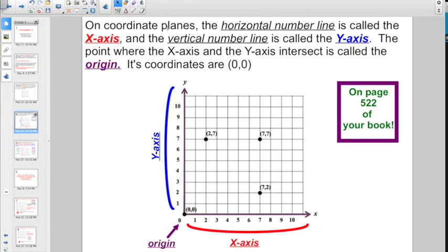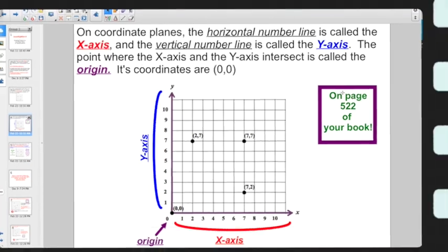We have a number line going horizontally, this is referred to as the x-axis, and a number line going vertically, that's referred to as the y-axis. Where they meet is always going to be 0, 0. The point where the x-axis and the y-axis intersect is called the origin. Its coordinates are 0, 0. This can be found on page 522 of your book.